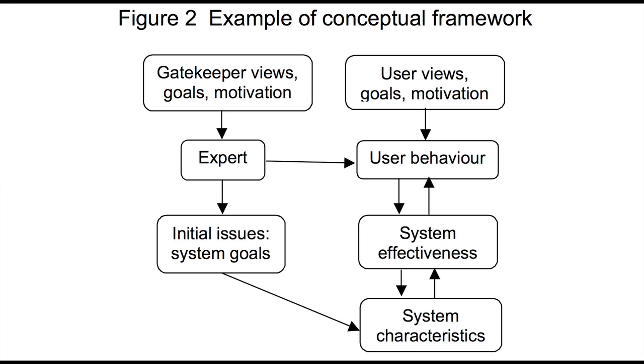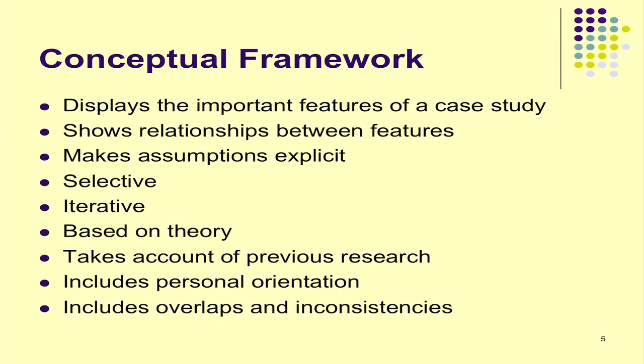To summarise: a conceptual framework displays the important features of a case study — what are the things you want to know about and collect information about? What are the objects within that? It might be people, but it might be other things, as suggested in this diagram. It shows the relations between them — who's affecting what, what themes are affecting other things, in what order things happen. It also makes your assumptions explicit. Writing stuff down, producing a diagram — you don't have to do a diagram, but doing something like that, a diagram or a list, you begin to make explicit what you're doing. And you can also be selective — you can say I'm going to look at these things and not those things. These things are less important; these things are really crucial, so I need to examine these.